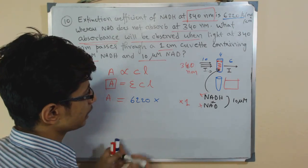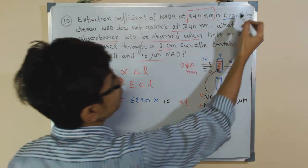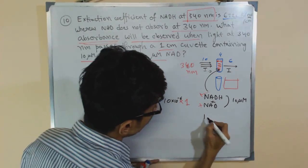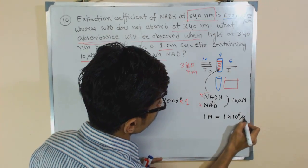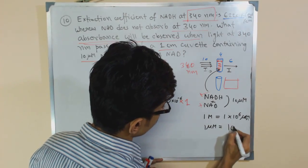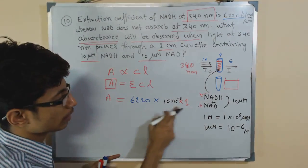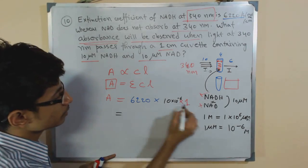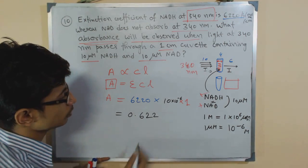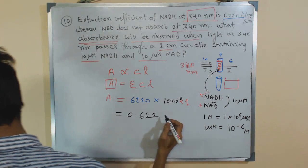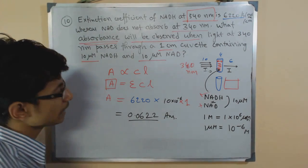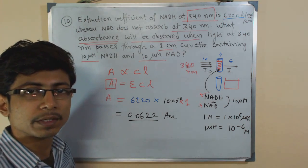The unit of epsilon is in mol⁻¹ cm⁻¹, so we need to convert 10 micromolar into moles. Since 1 micromole = 10⁻⁶ mol, we use 10 × 10⁻⁶ mol (i.e., 1 × 10⁻⁵ mol). Plugging the values into A = εcl: A = 6220 × 10⁻⁵ × 1, giving a final absorbance of 0.062.